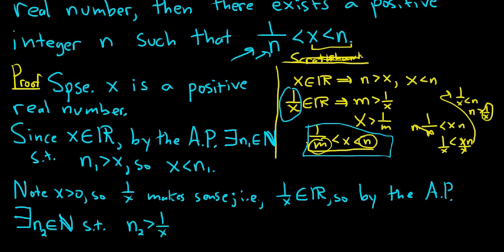And again, multiplying by x and dividing by n2, this would imply that x is bigger than 1 over n2. Or rather, 1 over n2 is less than x, reading it backwards, which is less than n1. This is where we were in the scratch work.